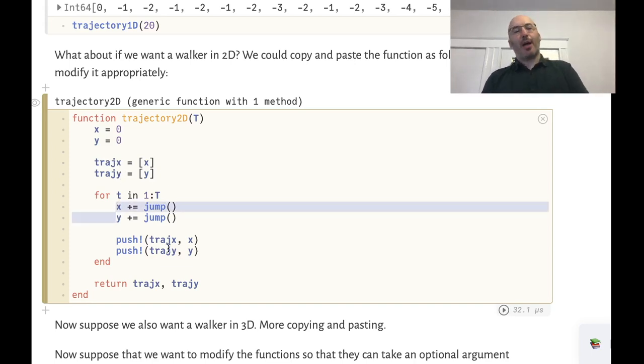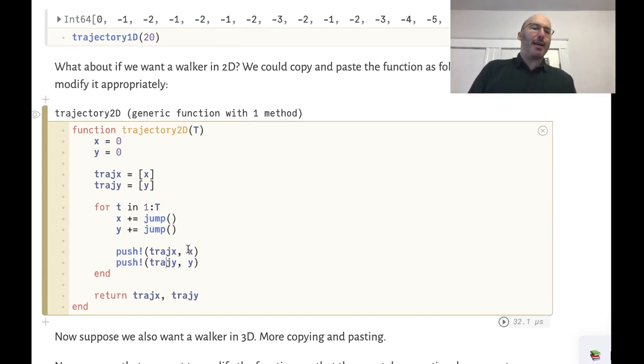We'd modify x and y at each step. And you can see that basically this is the same function but now we have this extra piece of information that we're in two dimensions.